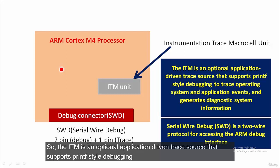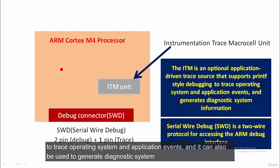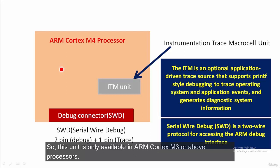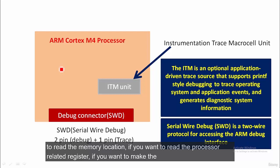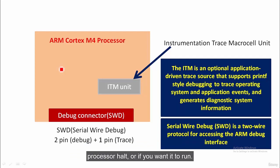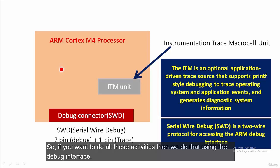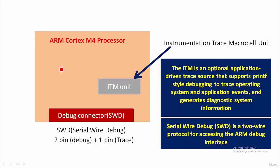ITM stands for Instrumentation Trace Macrocell unit. The ITM is an optional application-driven trace source that supports printf-style debugging to trace operating system and application events, and it can generate diagnostic system information. This unit is only available in ARM Cortex M3 or above processors — not in ARM Cortex M0. To debug the processor — reading registers, halting, or running — we use the debug interface.